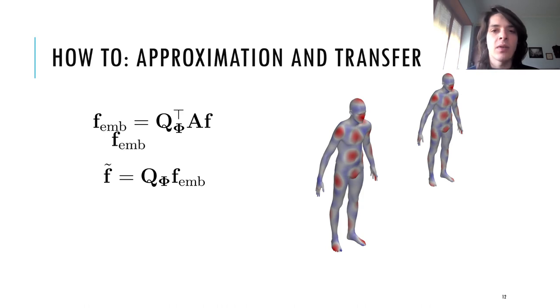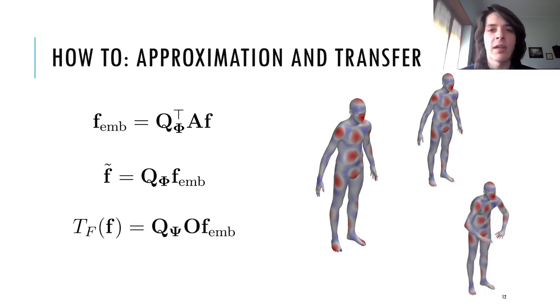Also, the functional map approach can be generalized to the eigenproducts by defining some transfer matrix O that properly represents orthogonalized eigenproducts from the source shape with linear combinations of orthogonalized eigenproducts on the target shape.